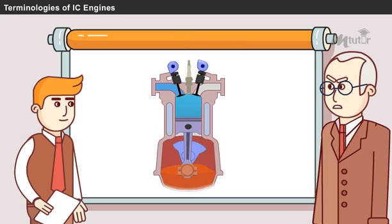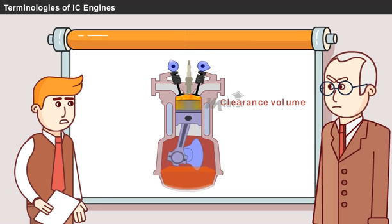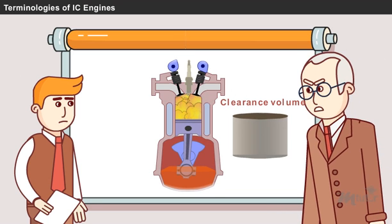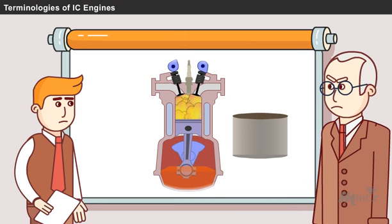What is clearance volume? Clearance volume. It is the distance covered by the piston from top dead center to the bottom dead center, sir. It is not clearance volume. It is swept volume. Were you really watching the working video, Sam?